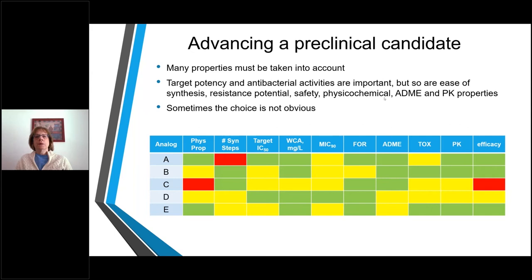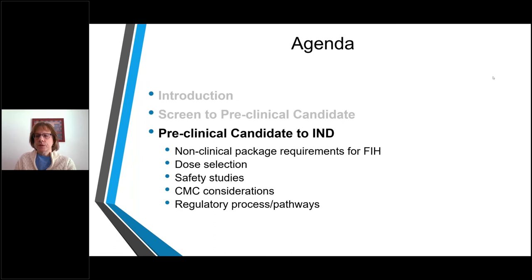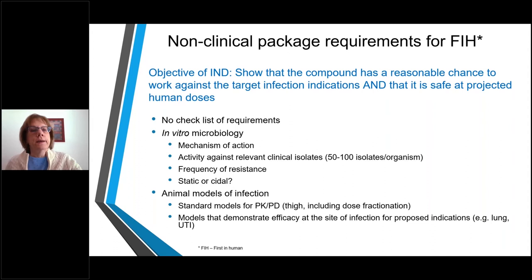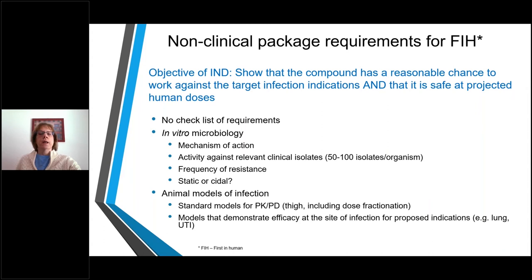Thank you, Alita, for that very thorough overview. She's taken you through preclinical candidate selection. Sometimes it's very clear to have one compound; sometimes it's not, and you may have up to three compounds to take through the next steps involving safety for the clinical candidate. Our line of sight now is getting into clinical trials — into Phase 1 first-in-human studies. To do that, we have to organize our data into an IND — Investigational New Drug Application. The objective of the IND is to show that the compound has a reasonable chance to work against the target infections and that it's safe at the projected human doses.